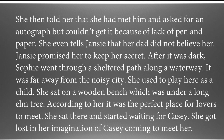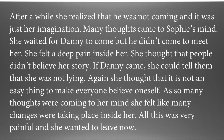After it was dark, Sophie went through a sheltered path along a waterway, far away from the noisy city. She used to play here as a child. She sat on a wooden bench under a long elm tree — the perfect place, she felt, for lovers to meet. She sat there and started waiting for Casey, getting lost in her imagination of him coming to meet her. After a while, she realised he was not coming and it was just her imagination. Many thoughts came to her mind; she felt deep pain, and all this change inside her was very painful.